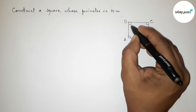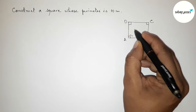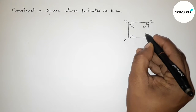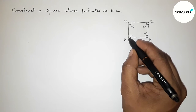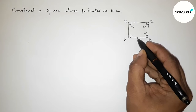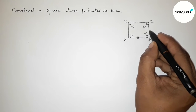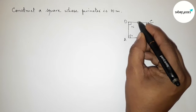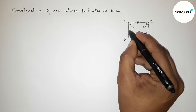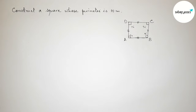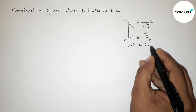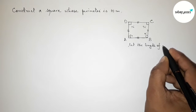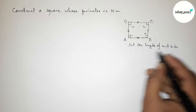All the angles are 90 degrees. We also know that the length of all the sides are equal — all sides are equal. So first, let us assume that the length of each side of the square is 'a' centimeters.